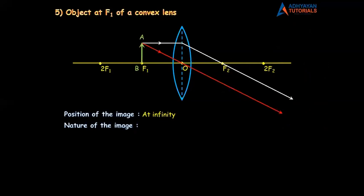Remember, I said a rule — a real image is always inverted. Now the image is inverted here, so that means the image has to be real. So we have two natures: image is real and image is inverted.